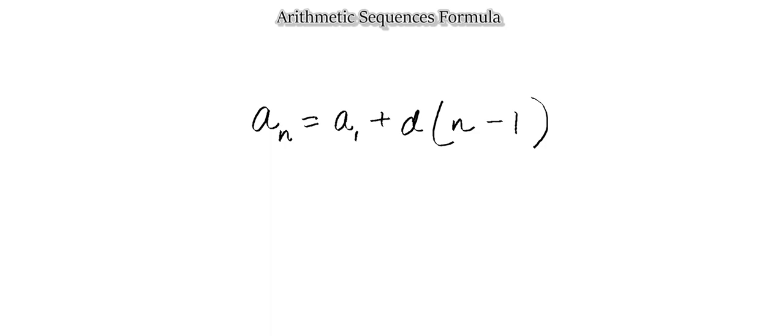Welcome to SNMB Academy. Moving on from basic arithmetic sequences, we're now going to look at how to form an expression using the arithmetic sequence formula. On the screen you can see that formula: a sub n equals a sub one plus d, bracket n minus one. Every single letter in here holds an identity.